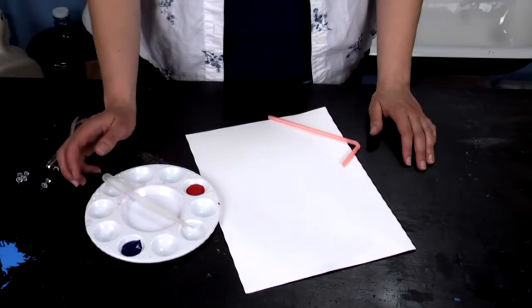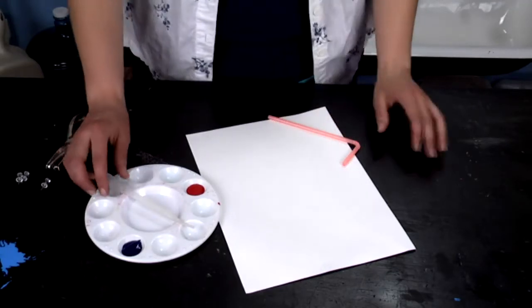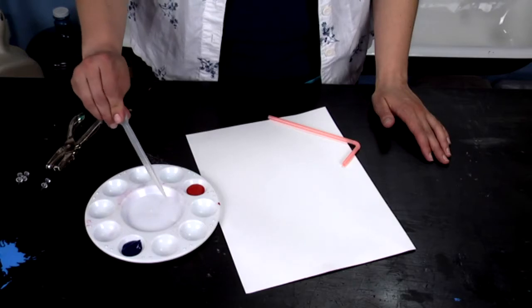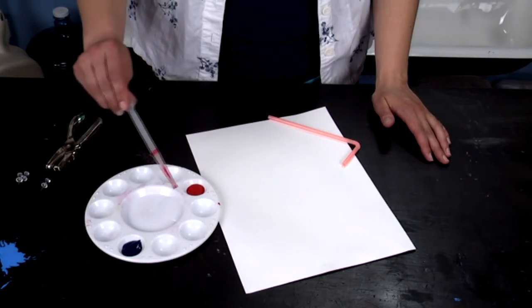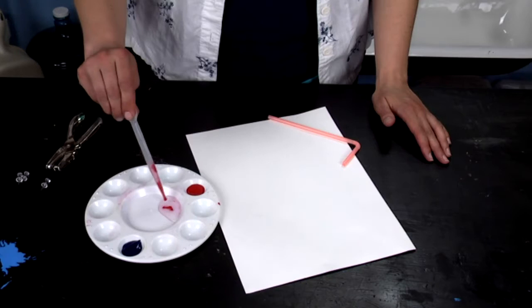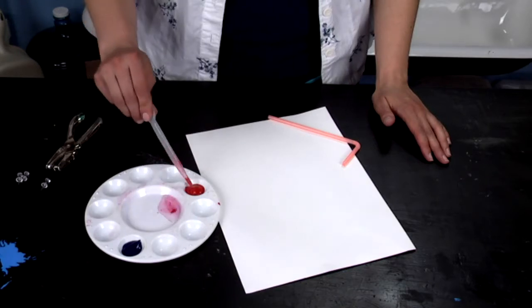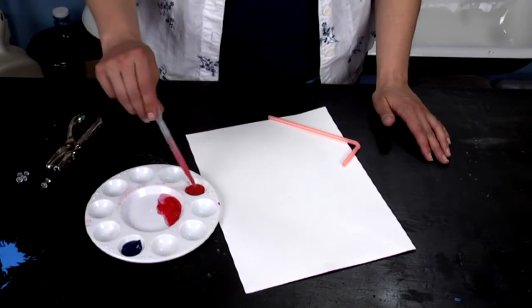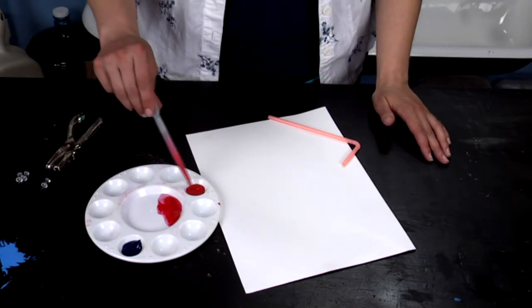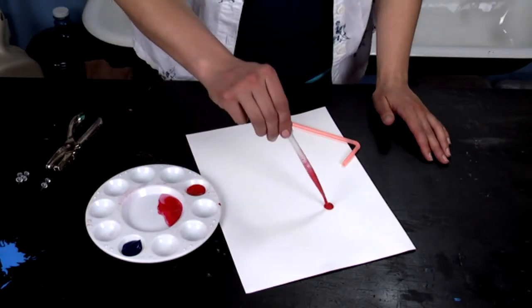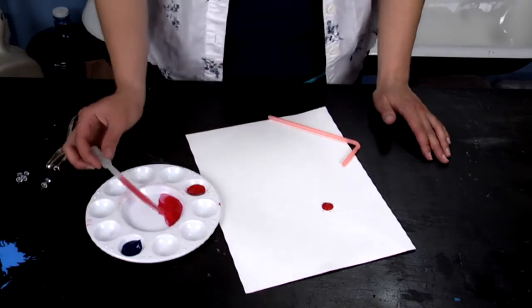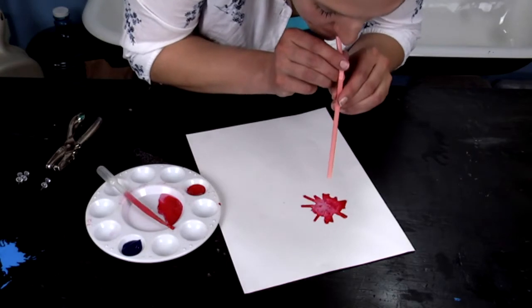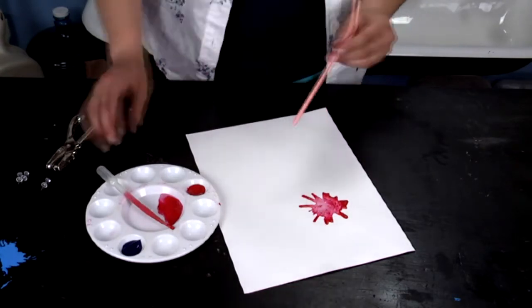The first step we're going to do is make some firework marks. What we're going to do is get some water, and I'm going to mix some red paint in it. I'm going to do a little dot here, and then you take the straw and blow out.